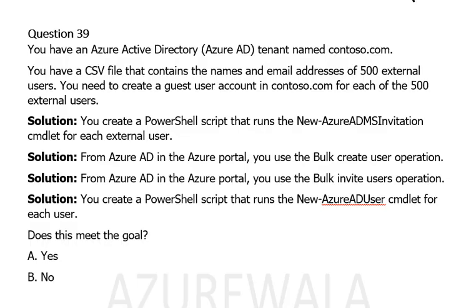You have an Azure Active Directory tenant named contoso.com. You have a CSV file that contains the names and email addresses of 500 external users. You need to create a guest user account in contoso.com for each of those 500 external users.